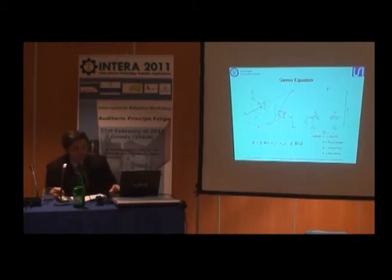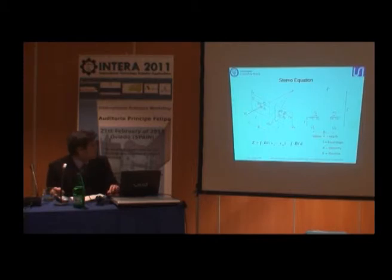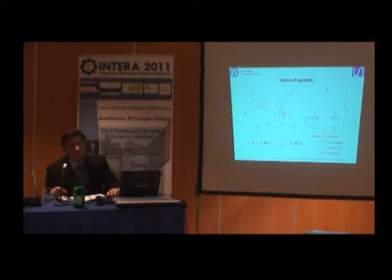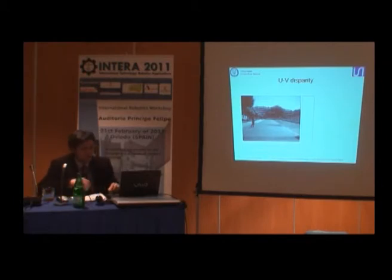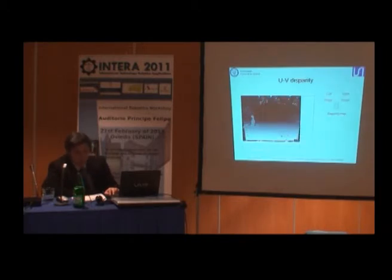The main feature that we use in stereo systems is that we have information of depth. The depth of a point is a function of the focal length, the baseline between both cameras, and the disparity between the projection of the point in the two cameras. From the visible images, we can construct the disparity map. Once the disparity map has been generated, it is possible to compute the U and the V disparity.